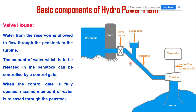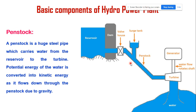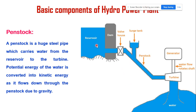The next component is the penstock. A penstock is a large steel pipe that carries water from the reservoir to the turbine. The potential energy of the water in the reservoir is converted into kinetic energy as it flows through the penstock due to gravity. When potential energy is maximum, maximum kinetic energy is developed.